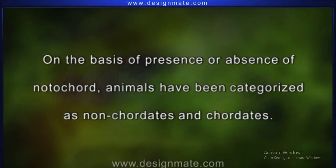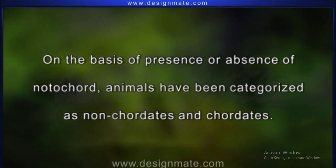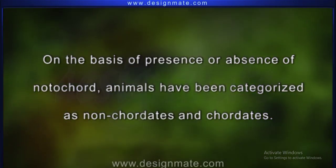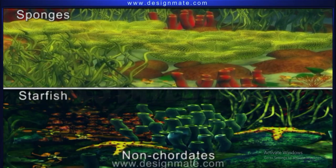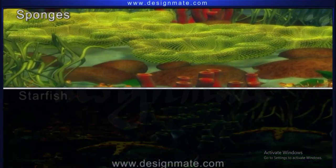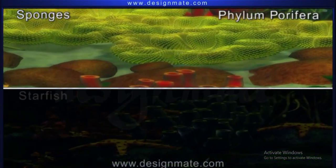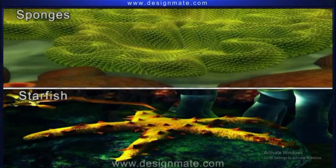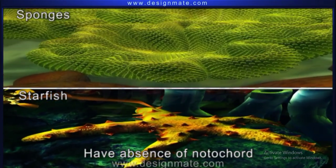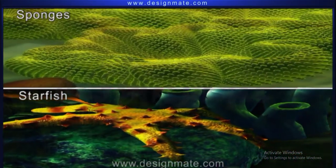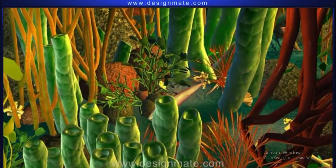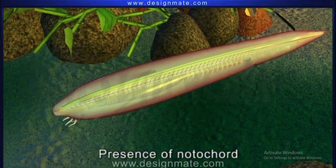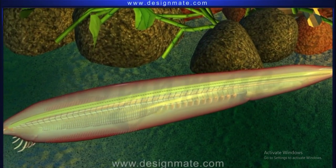On the basis of presence or absence of notochord, animals have been categorized as non-chordates and chordates. The non-chordates include animals like sponges belonging to phylum Porifera and starfish of phylum Echinodermata, which have absence of notochord throughout their life cycle. The chordates include all animals of phylum Chordata which show presence of notochord in some or the other stage of their life cycle.